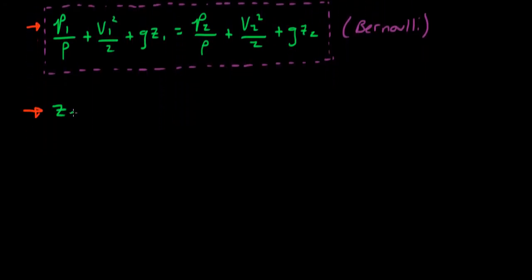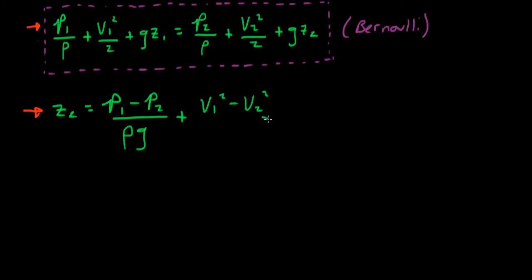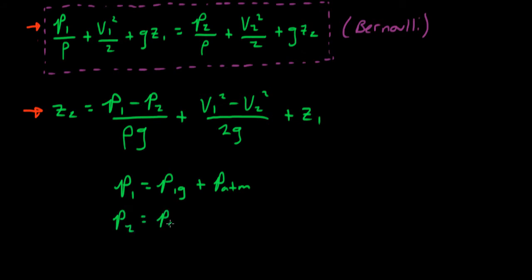We can solve this equation for the final elevation z2. We have z2 equals p1 minus p2, divided by the density times the acceleration due to gravity, plus the velocity at station 1 squared minus the velocity at station 2 squared, divided by 2 times the acceleration due to gravity, plus the elevation at station 1. The pressure at station 1 is equal to the gauge pressure at station 1 plus the atmospheric pressure, and the pressure at station 2 is equal to atmospheric. The difference p1 minus p2 becomes p1 gauge.